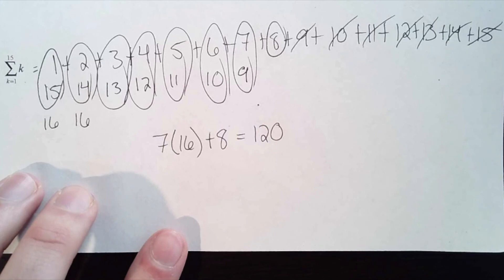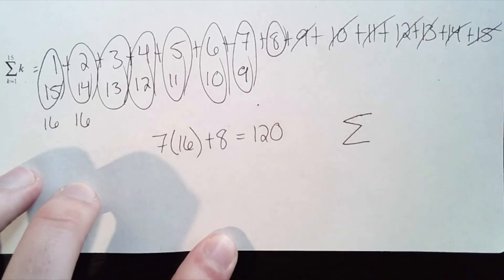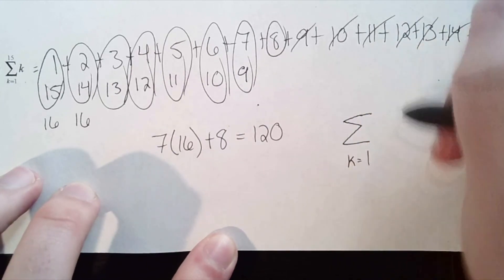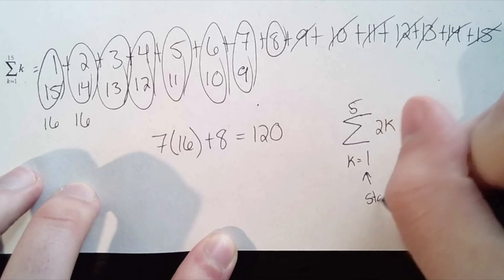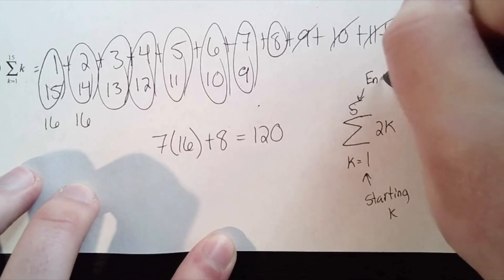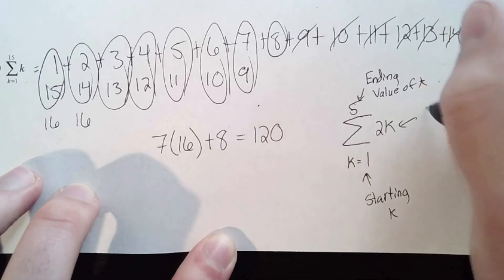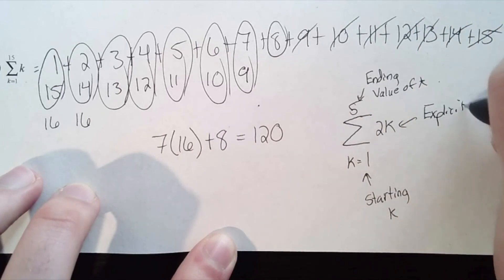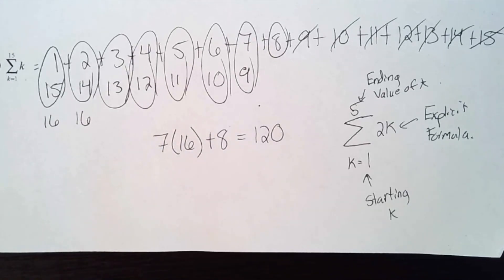To summarize series and sigma notation: you have your sigma symbol, the number on the bottom is your starting value of k, the number on top is your ending value of k, and next to it is your explicit formula. It's important that the formula is explicit and not recursive. If you have any questions, feel free to reach out.